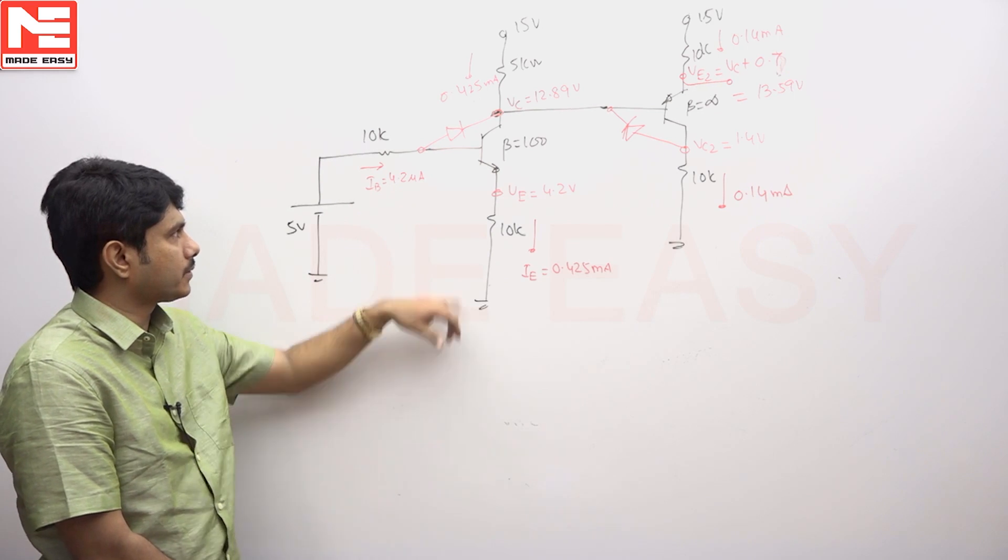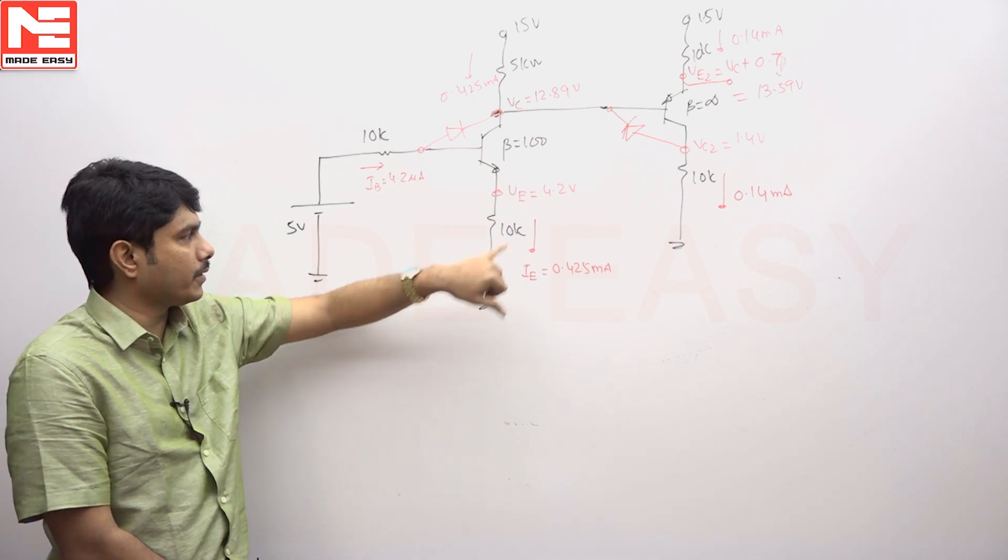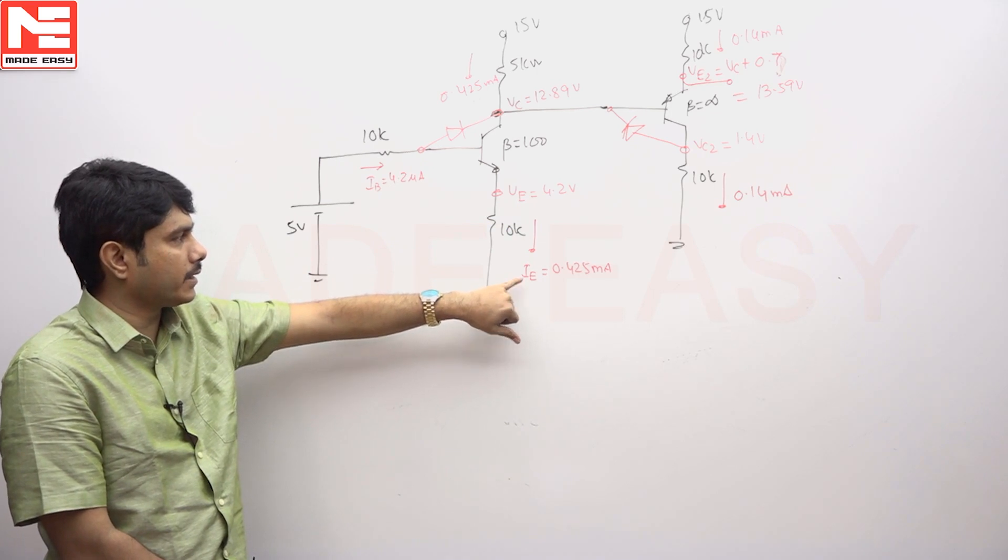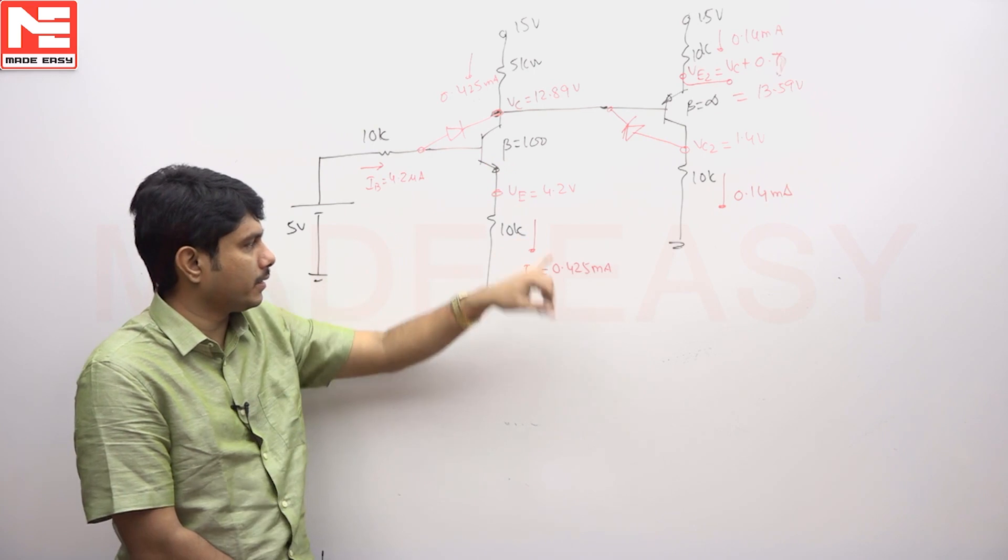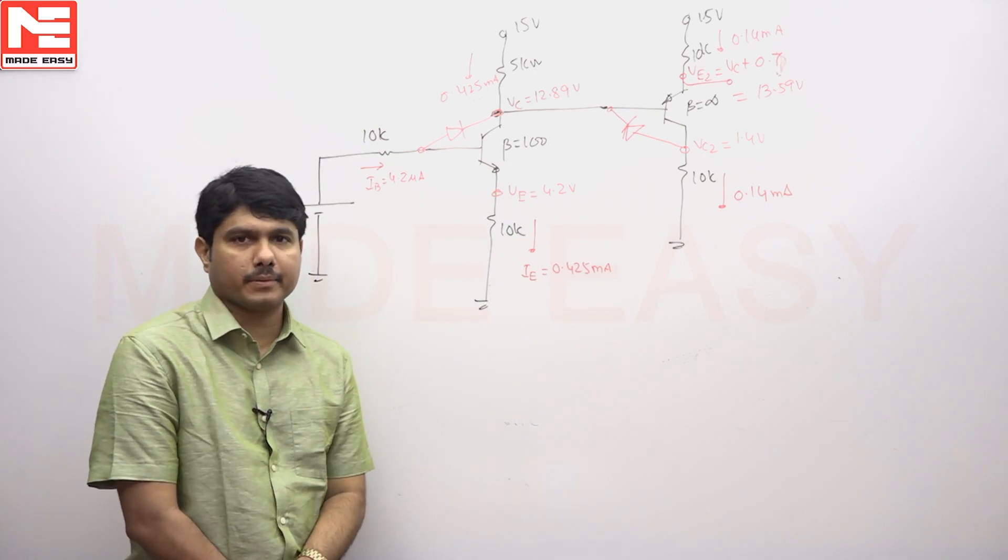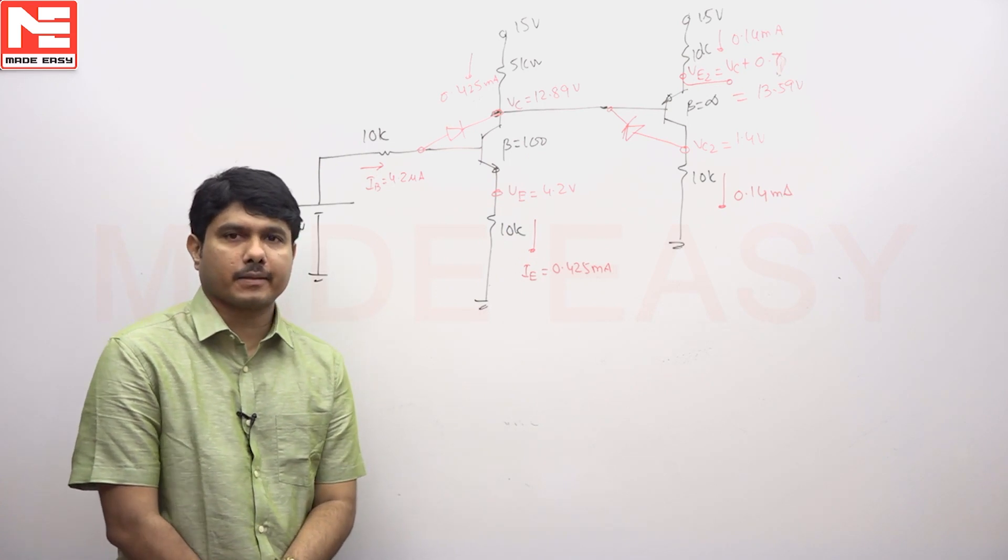After getting IB current as 4.2 microamperes, this potential VE is 4.2 volts. IB is 4.2 microamperes times 100, which becomes 0.425 milliamperes. 0.425 into 10k gives us the emitter voltage we are expecting there.